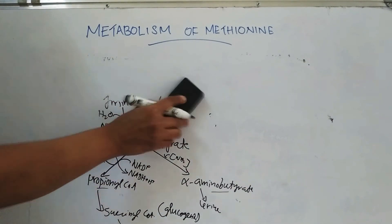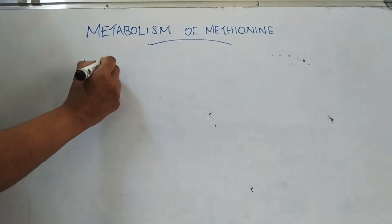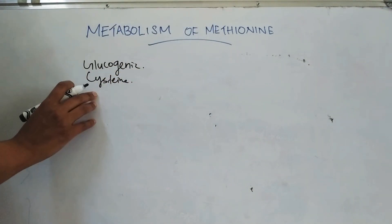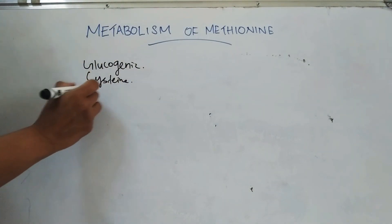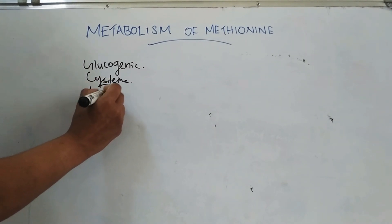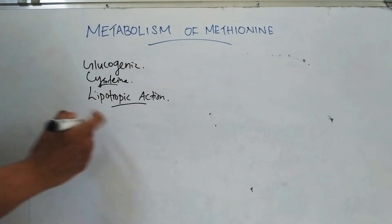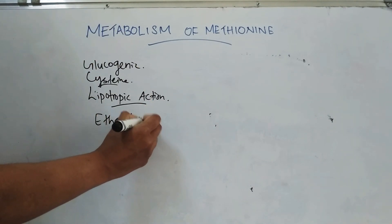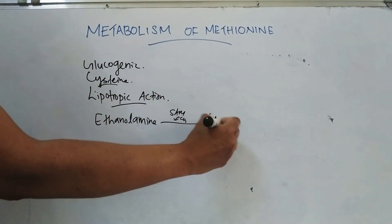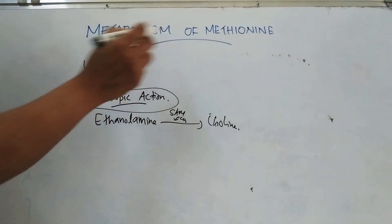Regarding the metabolic roles of methionine: methionine is glucogenic because propionyl-CoA, its end product, leads to succinyl-CoA which is glucogenic. It can also form cysteine, as the sulfur from methionine is directly transferred to cysteine while the carbon skeleton comes from serine. Another role is lipotropic action — S-adenosylmethionine can donate a methyl group to ethanolamine, converting it to choline, which is lipotropic and prevents the accumulation of fat in the liver.